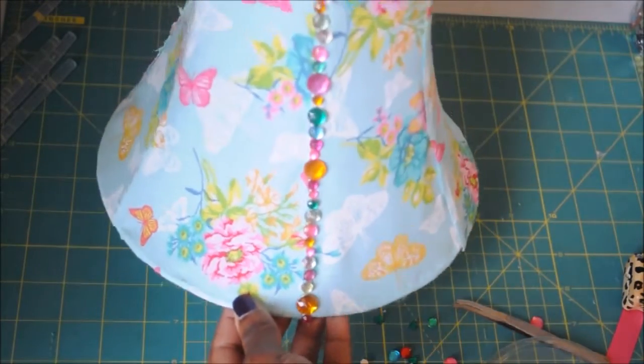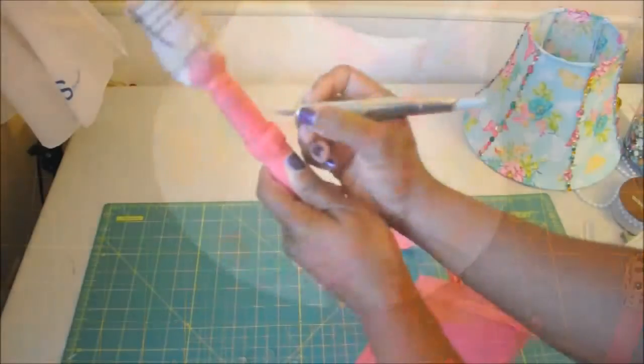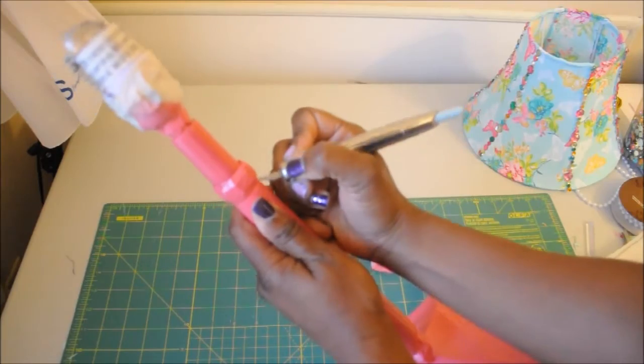And I thought it looked really nice. So using the glue gun, I applied rhinestones to each one of those seams until I had gone all around the shade.